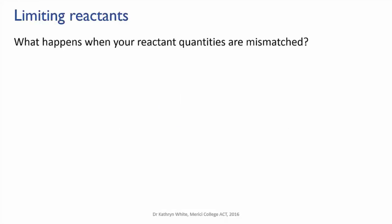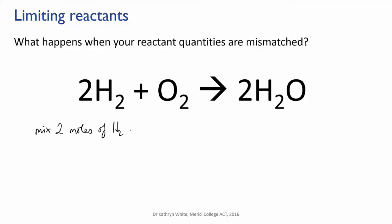But what happens if we don't have exactly the right ratio of reactants? For instance, say we were reacting hydrogen with oxygen to give water, blowing up a hydrogen balloon. We know that two moles of hydrogen reacts with one mole of oxygen. But what if we happen to accidentally mix two moles of hydrogen with two moles of oxygen? What would be left at the end of the reaction?